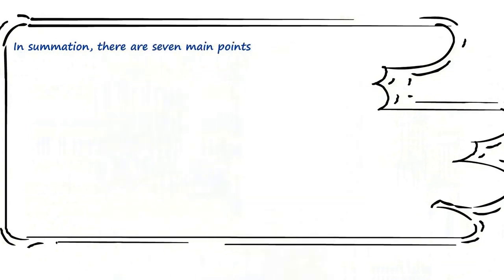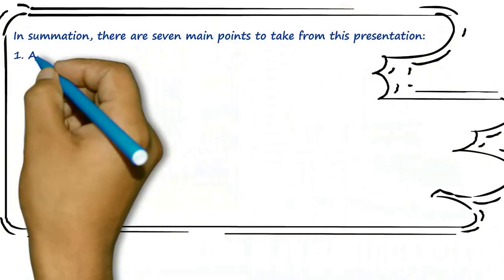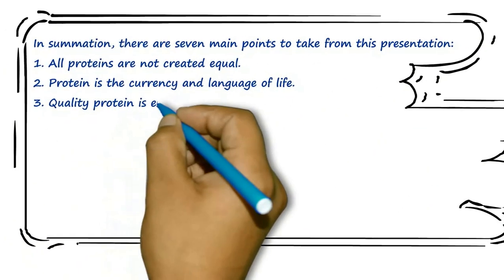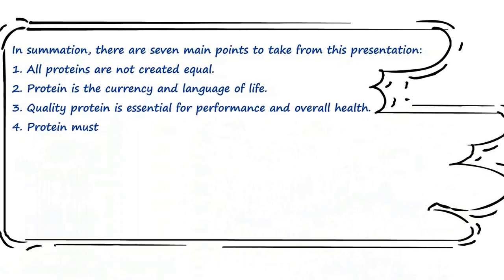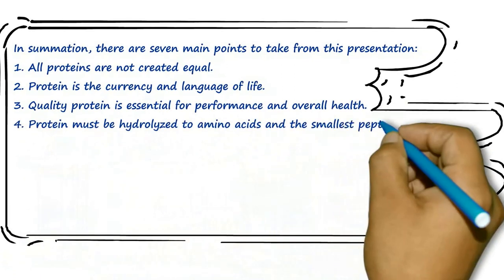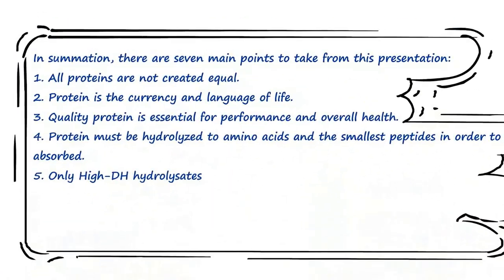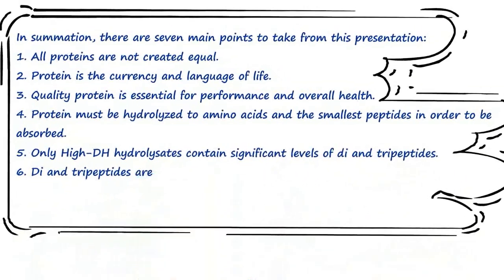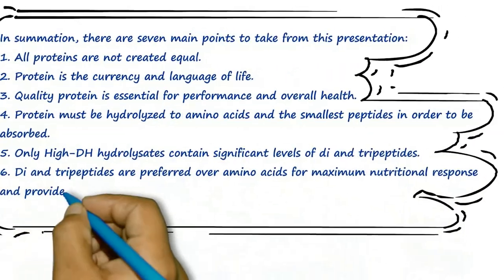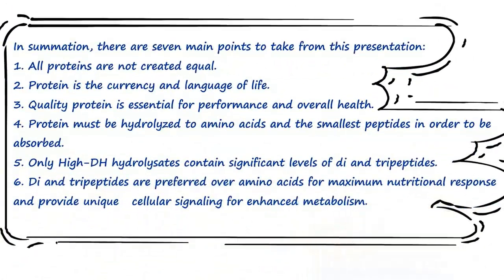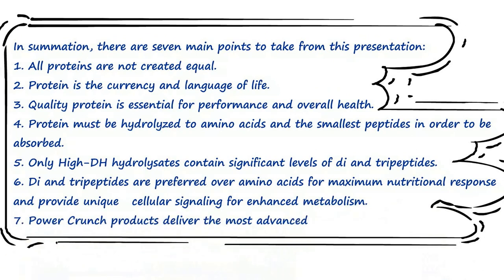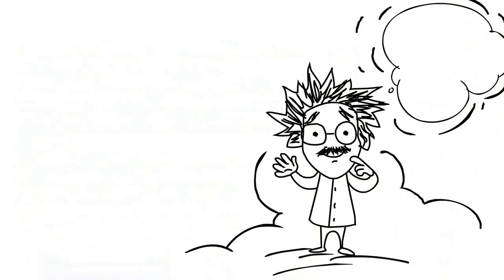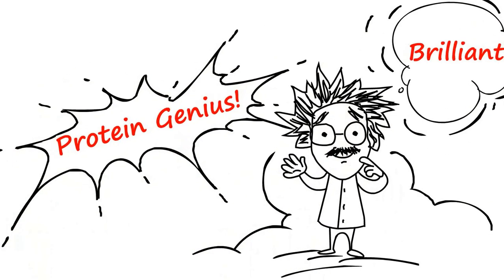In summation, there are seven main points to take from this presentation. All proteins are not created equal. Protein is the currency and language of life. Quality protein is essential for performance and overall health. Protein must be hydrolyzed to amino acids and the smallest peptides in order to be absorbed. Only high DH hydrolysates contain significant levels of di- and tripeptides. Di- and tripeptides are preferred over amino acids for maximum nutritional response and provide unique cellular signaling for enhanced metabolism. Power Crunch products deliver the most advanced protein nutrition available. You completed the course in sweet science. It's time to take the quiz and find out if you are a protein genius. Brilliant!